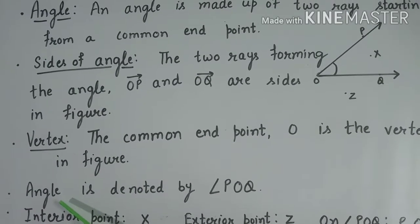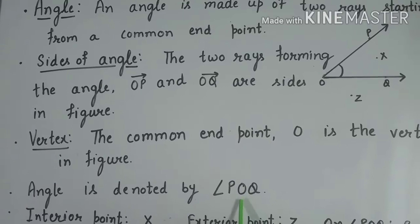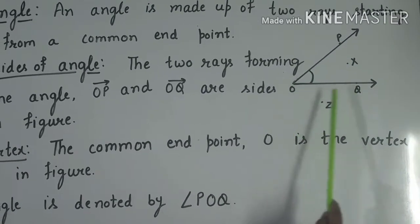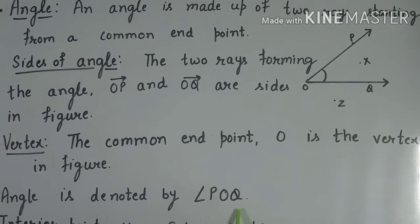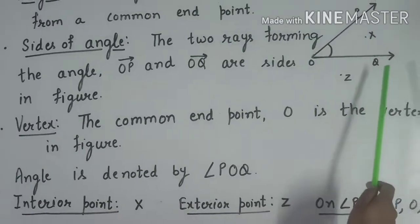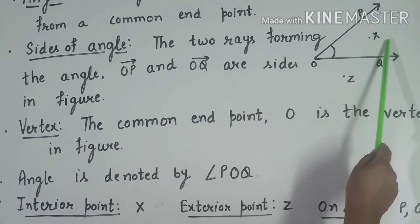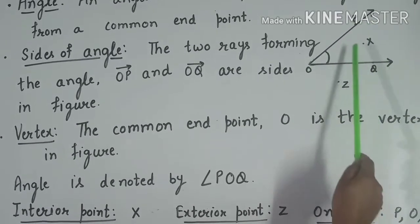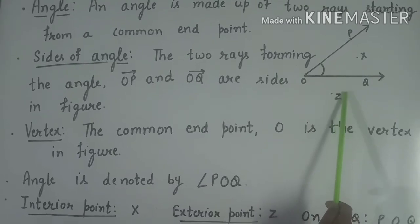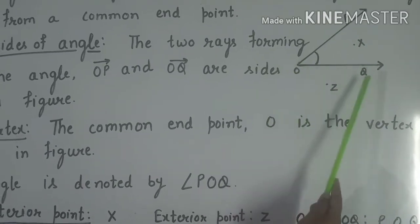Now, how can we denote the angle? Angle is denoted by the angle symbol, and the vertex is written in the middle. So the angle is denoted as angle POQ. The interior point in this figure is X, and the exterior point outside angle POQ is Z. The points on angle POQ are P, O, and Q.